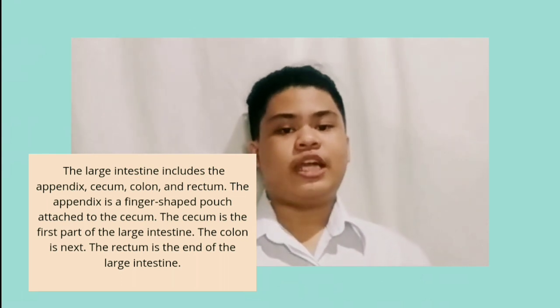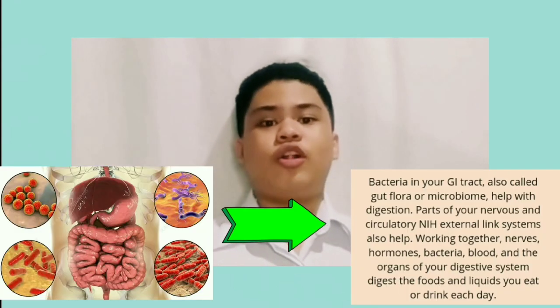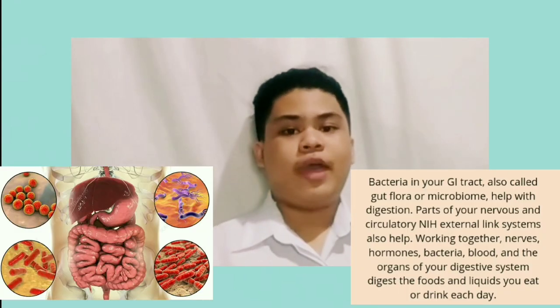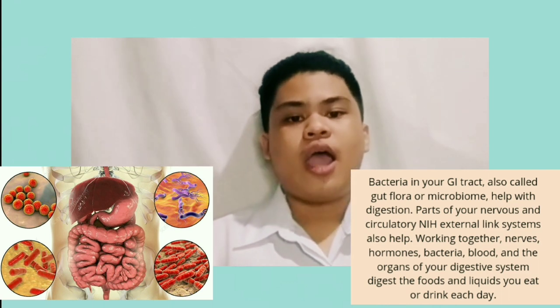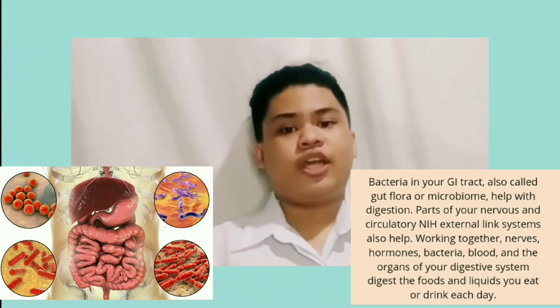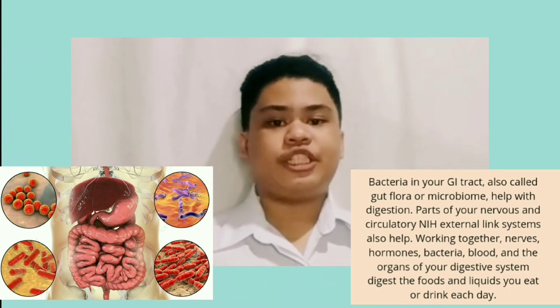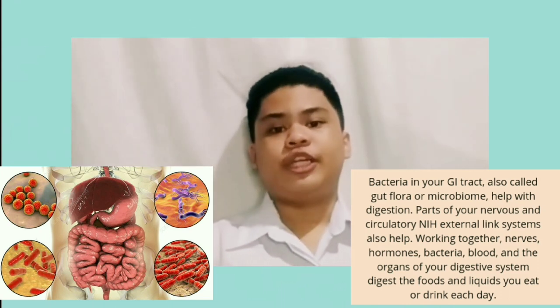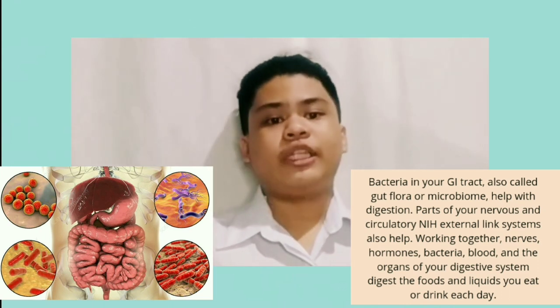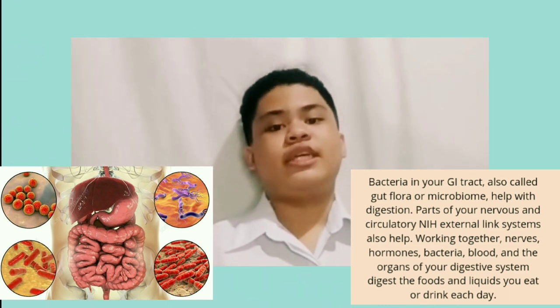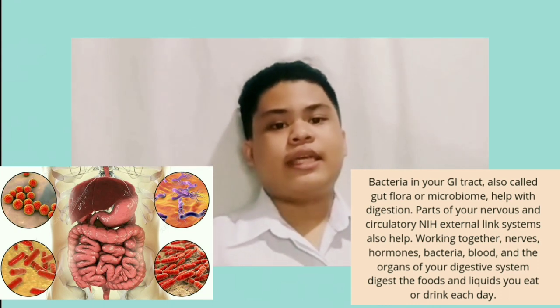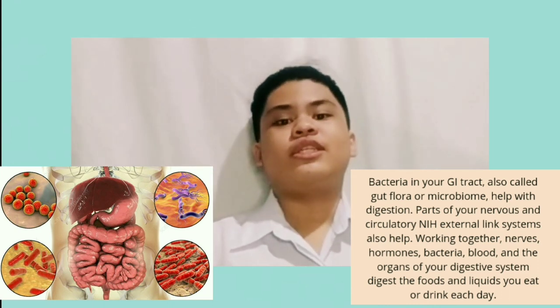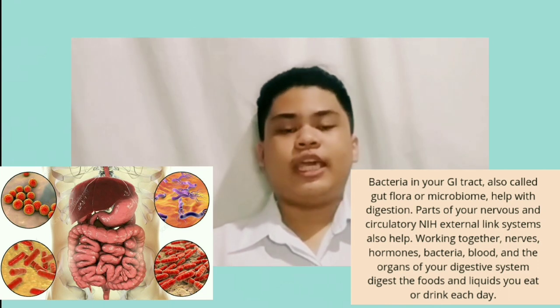The colon is next, and the rectum is the end of the large intestine. Bacteria in your GI tract, also called flora or microbiome, help with digestion. Parts of the nervous and circulatory system also help, working together with hormones, bacteria, blood, and the organs of the digestive system to digest the food and liquids you eat or drink each day.